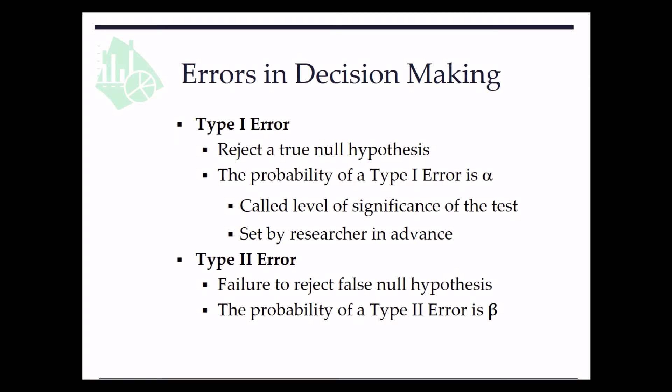Type 1 error means we reject a true null hypothesis. This can be the case that a person is ill with some symptom and actually he has COVID-19. But after some test, the doctors make a claim that this person has no COVID-19, so he's healthy. So here the doctors made a type 1 error mistake.